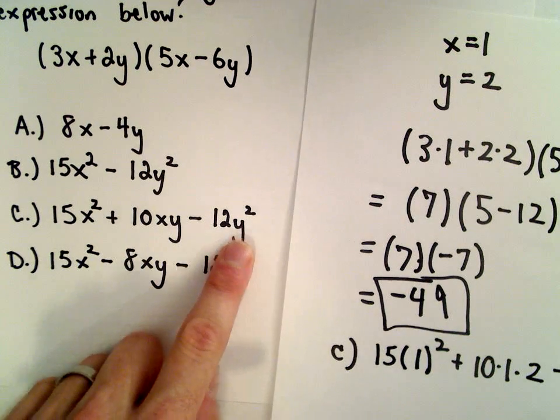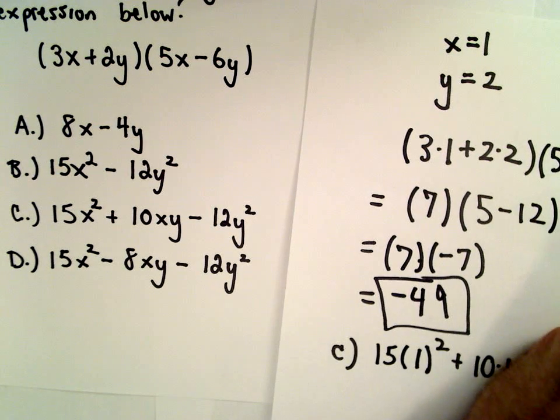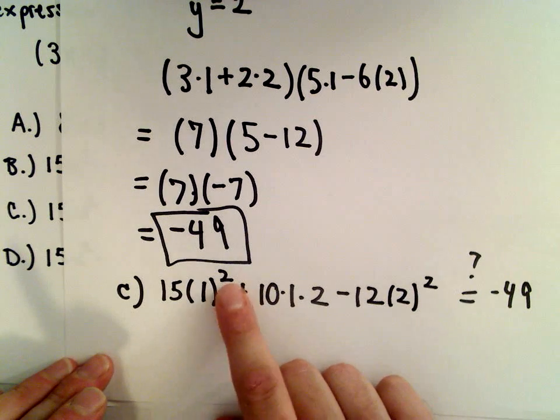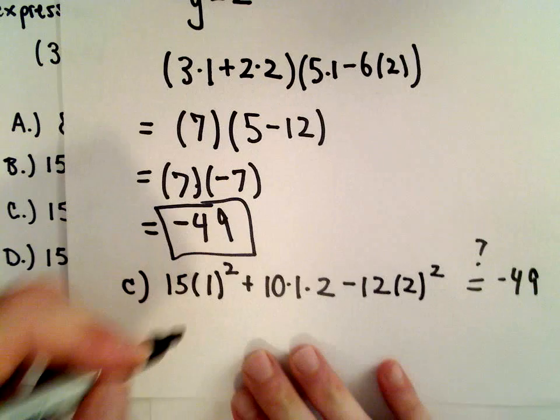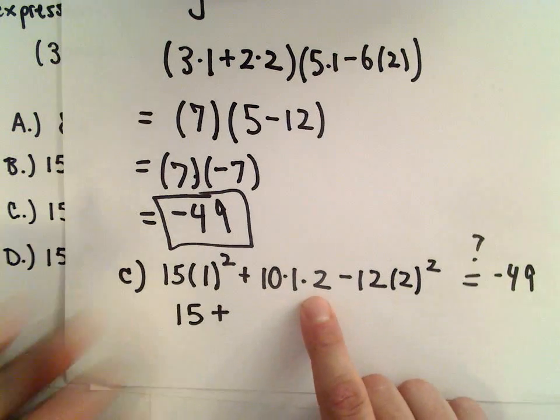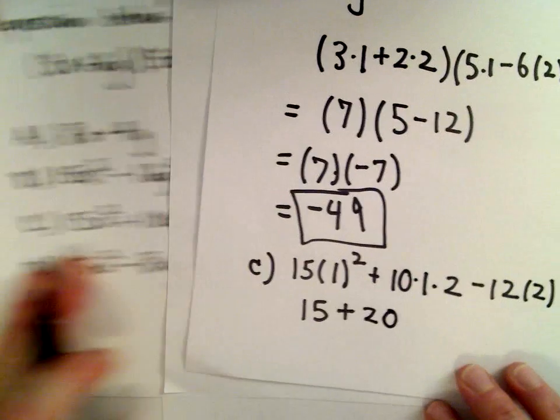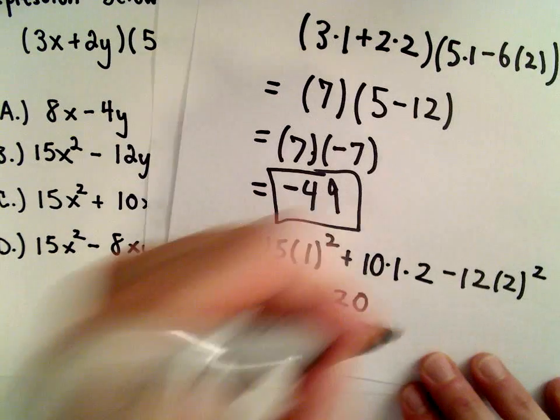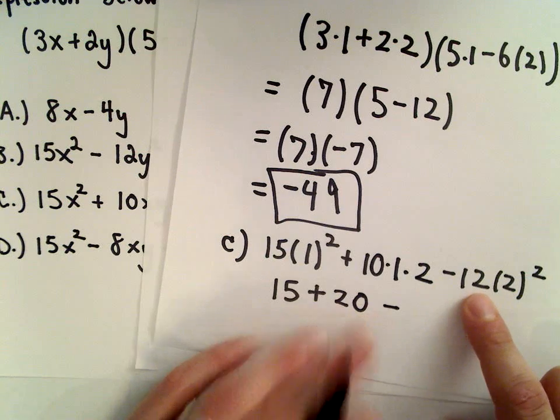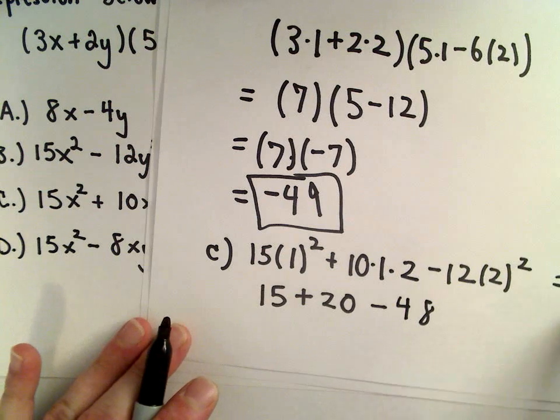Order of operations: 1 squared is 1 times 15, that's 15. 10 multiplied by 2 is 20. 2 squared is 4, times negative 12 is negative 48. 15 plus 20 minus 48 doesn't give me negative 49, so C didn't work.